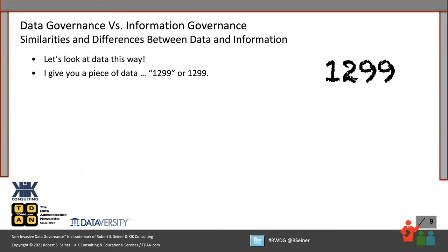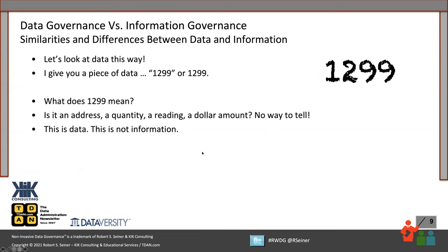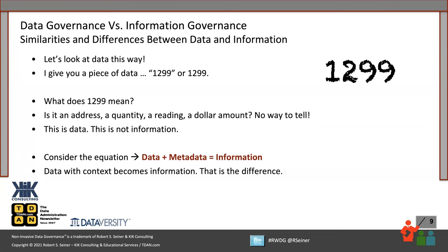Here's a free piece of data: the number 1299. Now what are you going to do with that data? You don't really know what it means. Is it an address? Is it a quantity or a dollar amount? There's really no way to tell. So this is data — this is not information. It could be a lot of different things. And that brings me to an equation that really hits home with a lot of people.